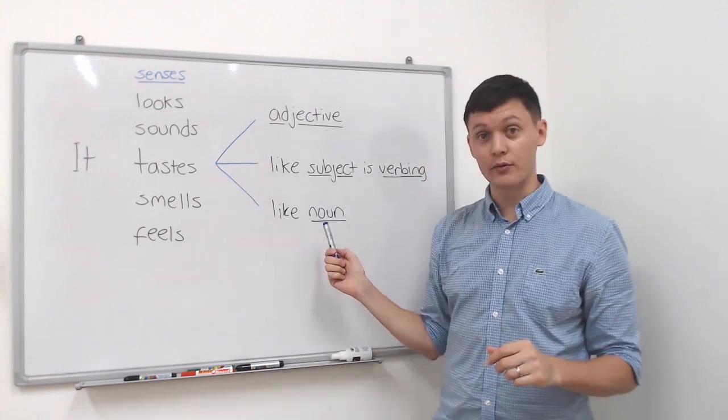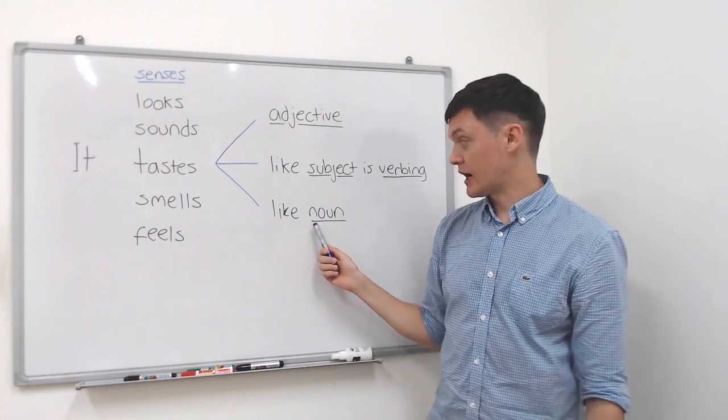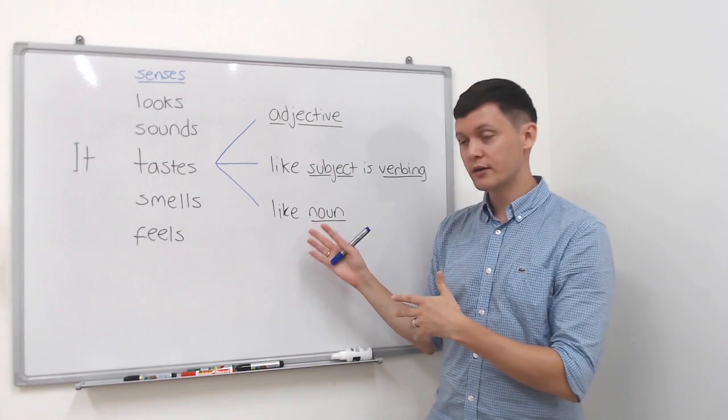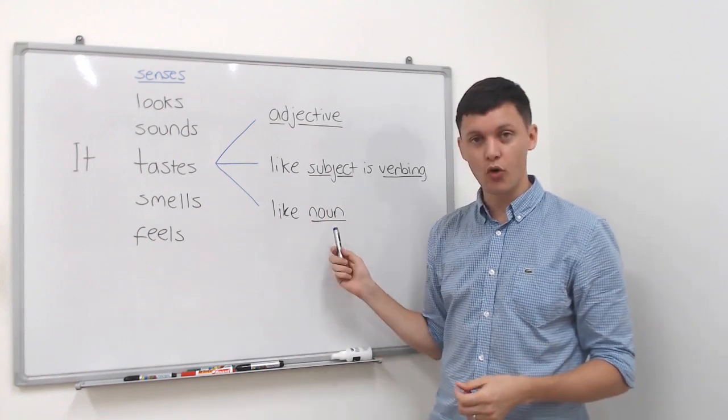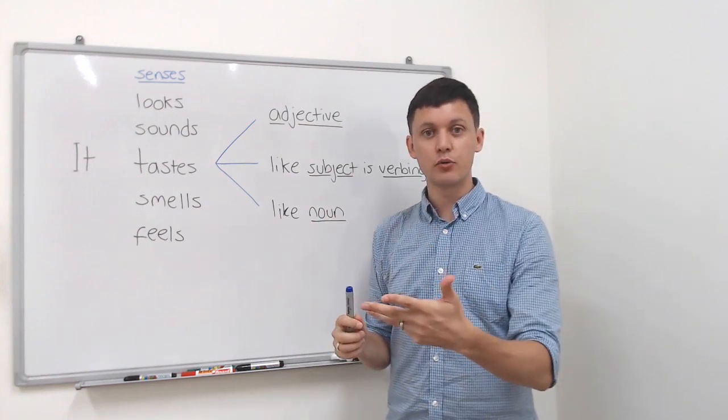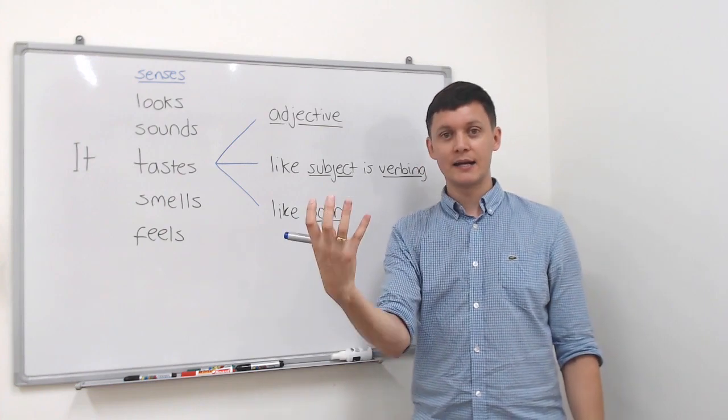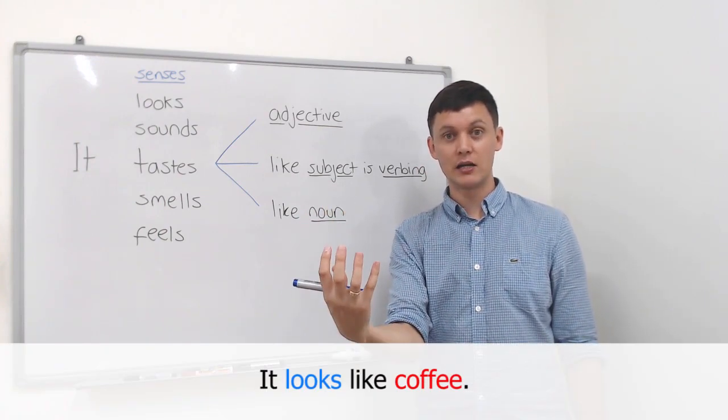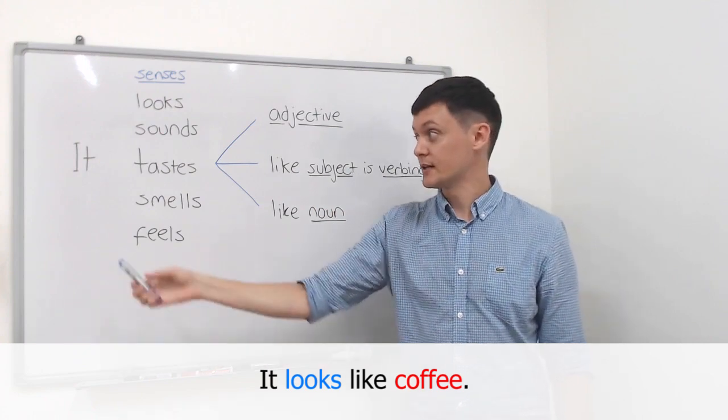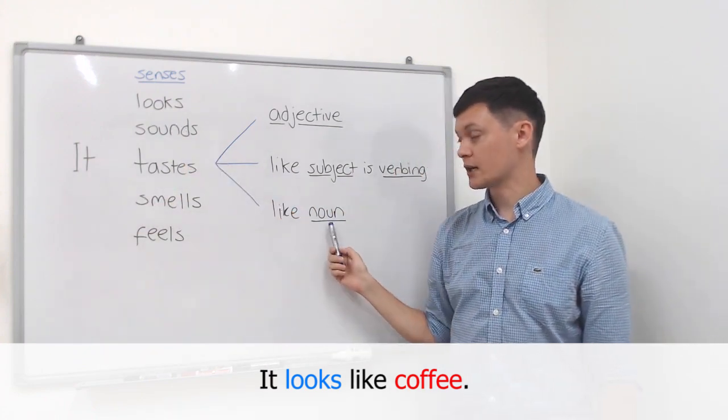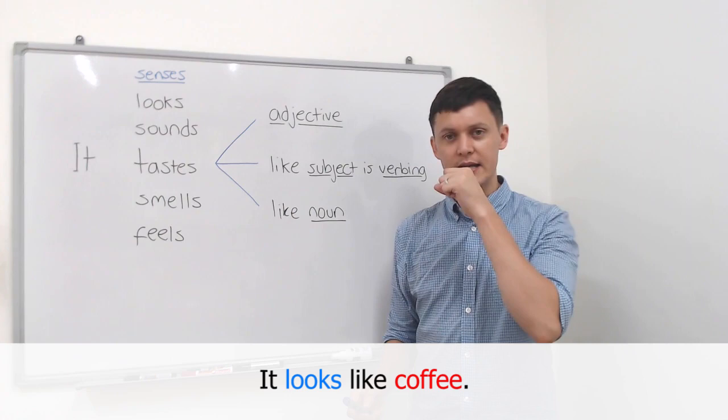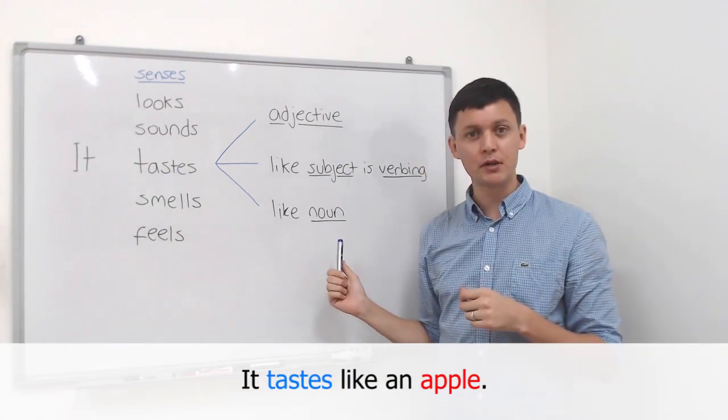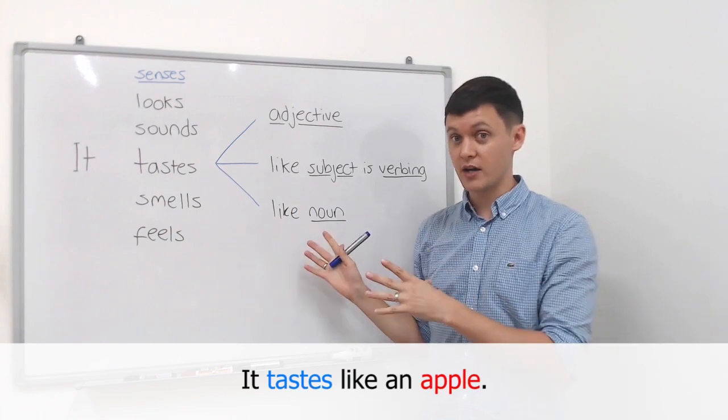Finally we have the noun and this is just simply 'like noun' but remember we do need an article or maybe you need to say 'my' or something before the noun. So for example we see some brown liquid and we say oh it looks like coffee. I eat something. Oh it tastes like an apple.